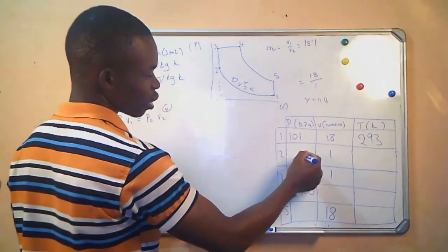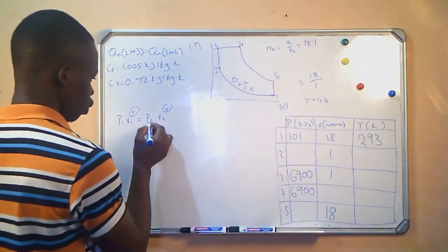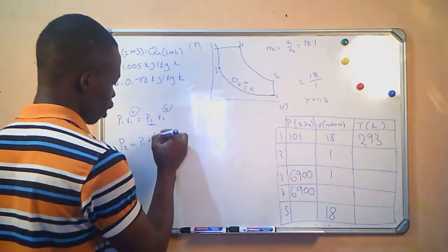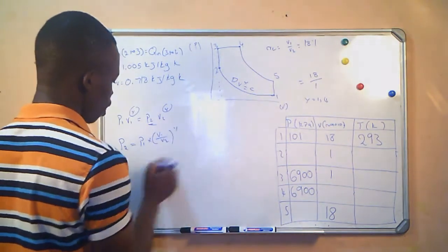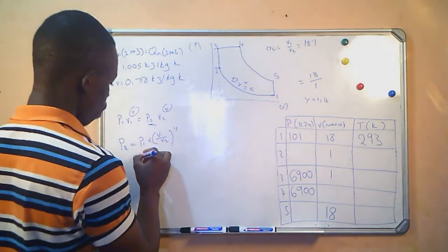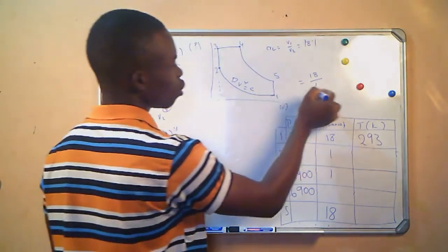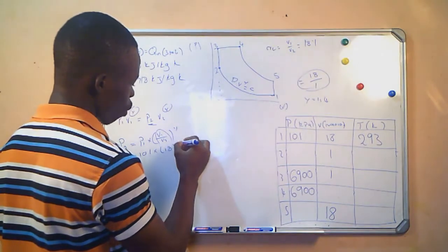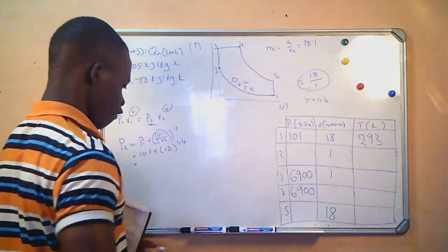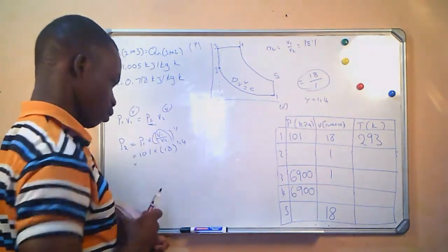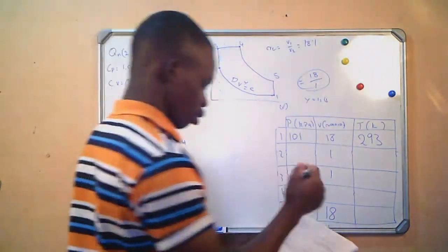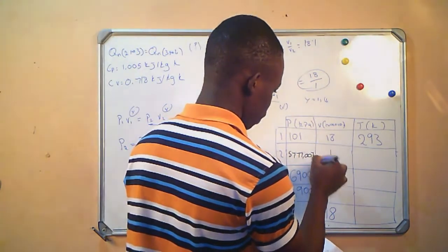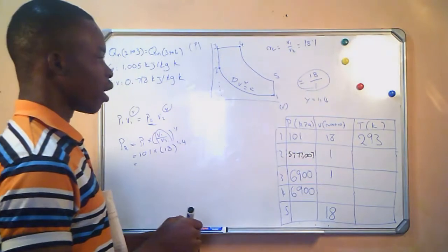We need P2, so we use P1 times (V1/V2) raised to gamma. P1 is 101 kPa and V1/V2 is the compression ratio of 18, raised to gamma 1.4. This gives us P2 equals 5777.007 kPa, which we record in the table.